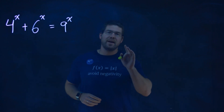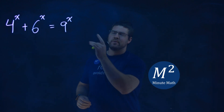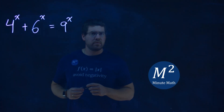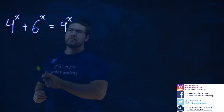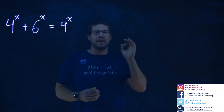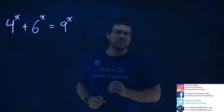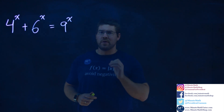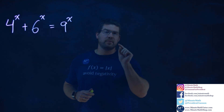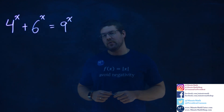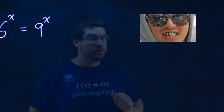Hi, I'm Sean Gannon, and this is Minute Math, and we have this famous problem right here: 4 to the x plus 6 to the x equals 9 to the x, and we want to solve for x. I'm going to give you a moment to see if you know what the answer is, but I'm going to give you a hint — it's golden.